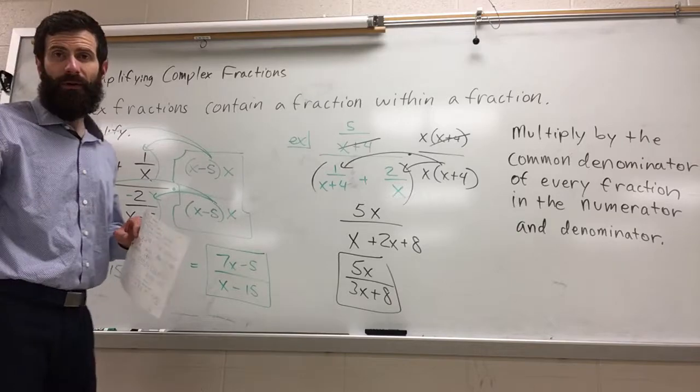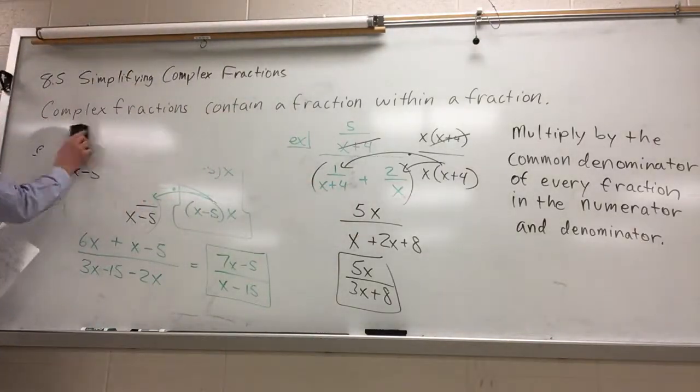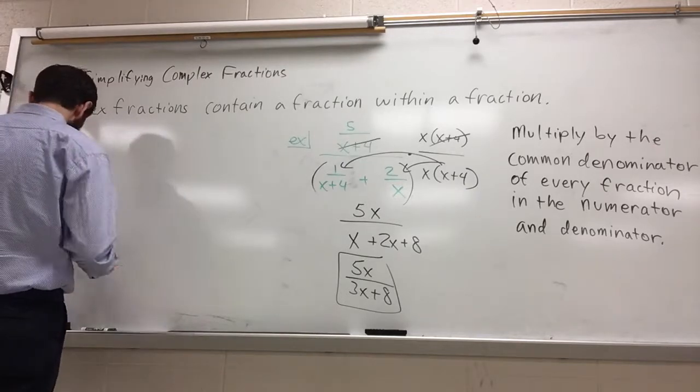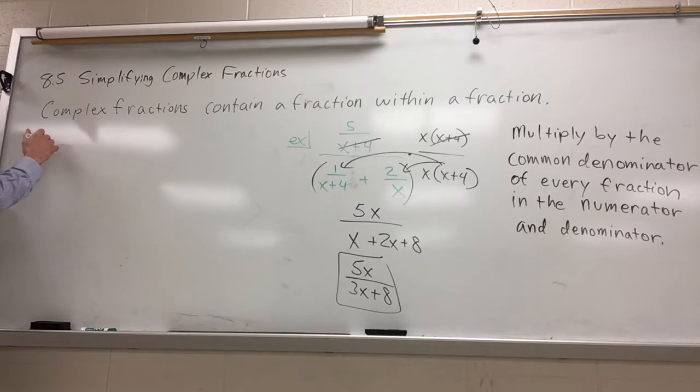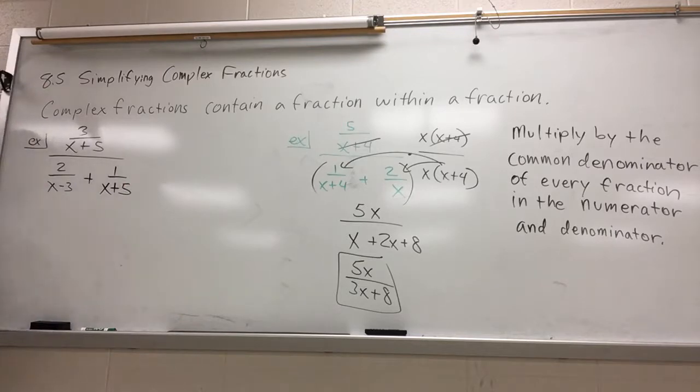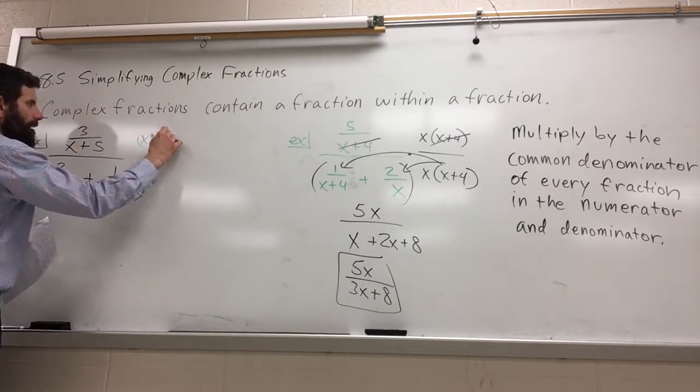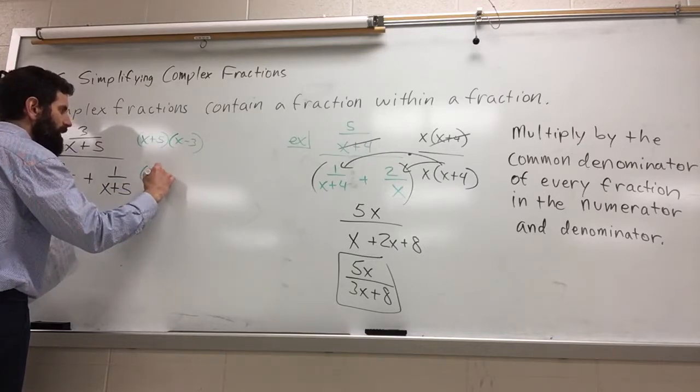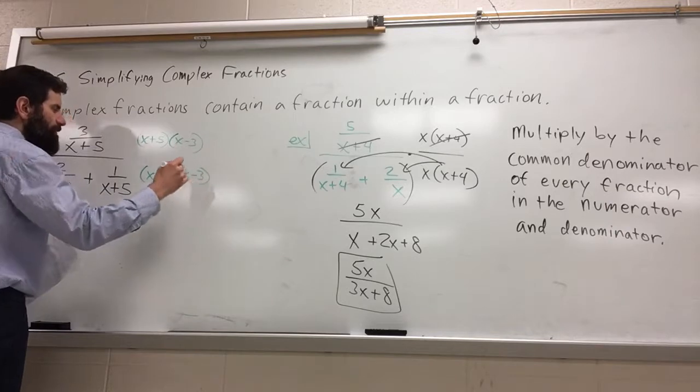Let's do 2 more examples. On any one of these, if you want to stop the video and try it yourself and then check your work, of course please do so. 3 over x plus 5 divided by 2 over x minus 3 plus 1 over x plus 5. Same sort of deal, fraction within a fraction. Let's multiply by our common denominator of everything. We need an x plus 5, got the x plus 5, we need an x minus 3. That's going to be my common denominator.